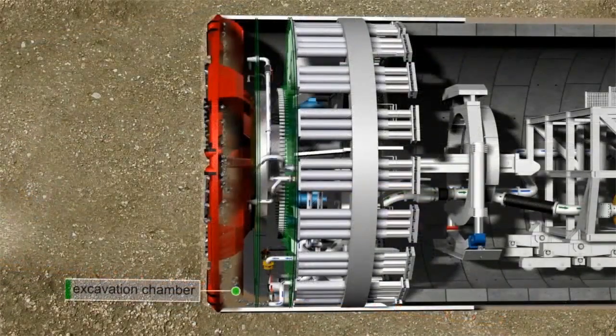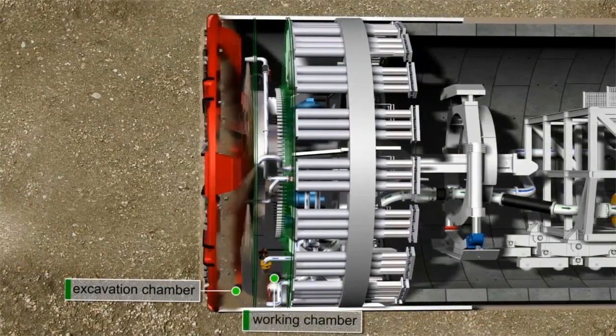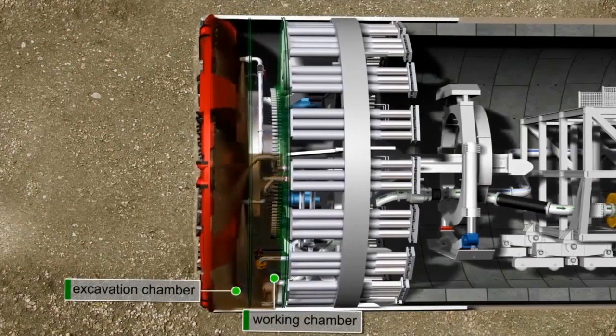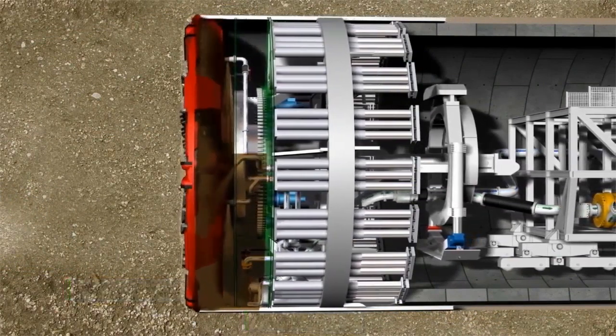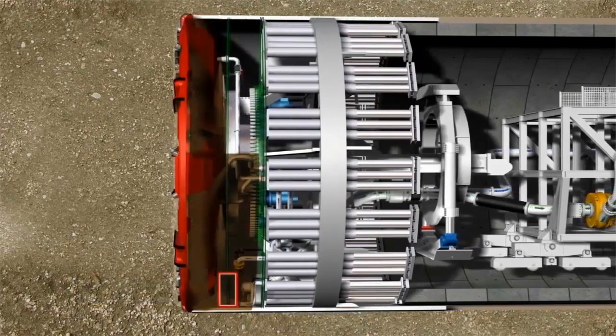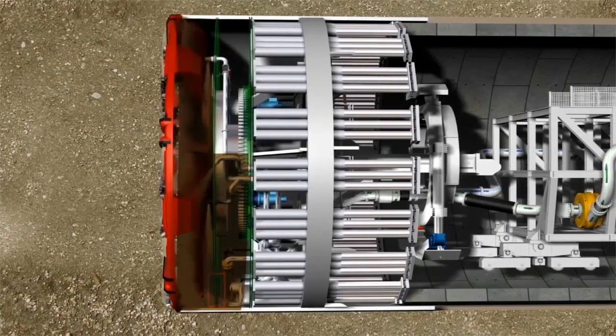The excavation chamber is situated behind the cutting wheel and separated by a submerged wall from the working chamber. The excavation chamber is completely filled with bentonite and the working chamber is approximately two-thirds filled. The two chambers are connected in the form of communicating pipes via an opening in the submerged wall.